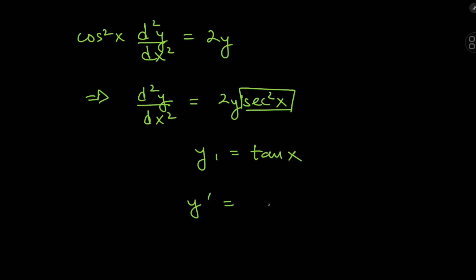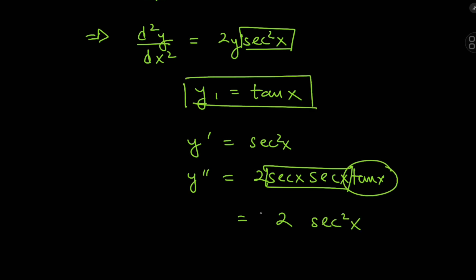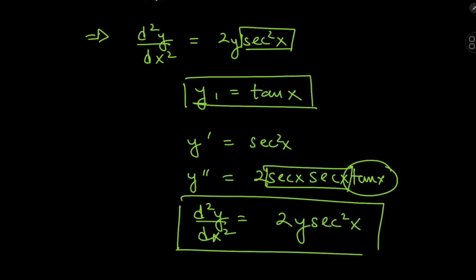Differentiating y₁ = tan(x) with respect to x gives us sec²(x), and differentiating one more time gives us 2·sec(x)·(sec(x)·tan(x)), so we get 2·sec²(x)·tan(x). Since tan(x) is what we're calling y, we have 2y·sec²(x) equal to the second derivative of y — so this particular solution works.